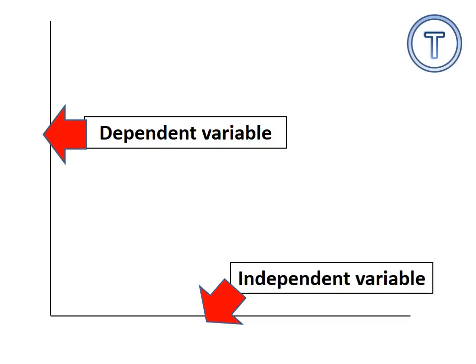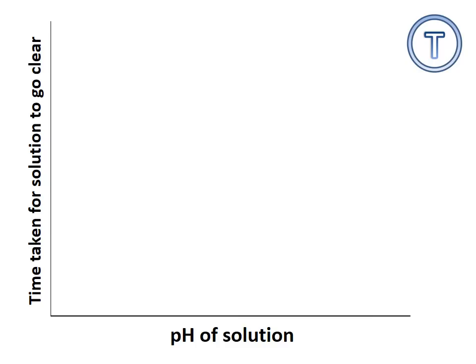So, which way to put my axis? Well, the thing I change, my independent variable is on the bottom of the x-axis. My dependent variable, the thing I'm measuring is there on the y-axis. It depends on what I'm changing. So, in this case, the thing I was changing was pH of solution. The thing which I was measuring was time taken for solution to go clear.